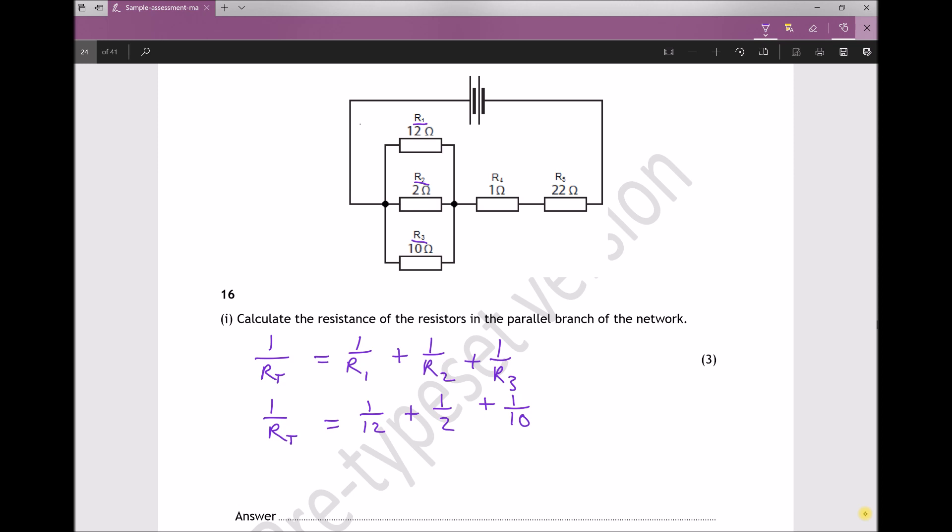This gives us 1 over RT equal to, as a decimal, 0.683 recurring.